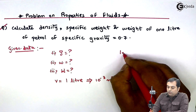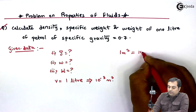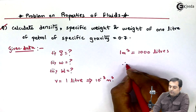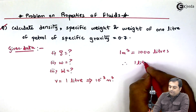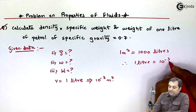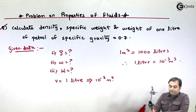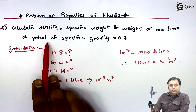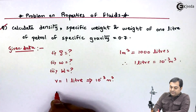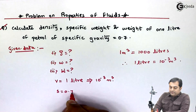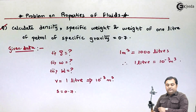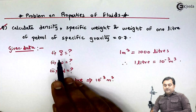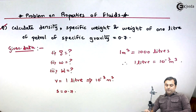This relation holds because 1 meter cube can hold 1000 liters of water, so 1 liter equals 10 raise to minus 3 meter cube. It is also given that petrol has specific gravity S = 0.7. Now let us find the solution for this problem.